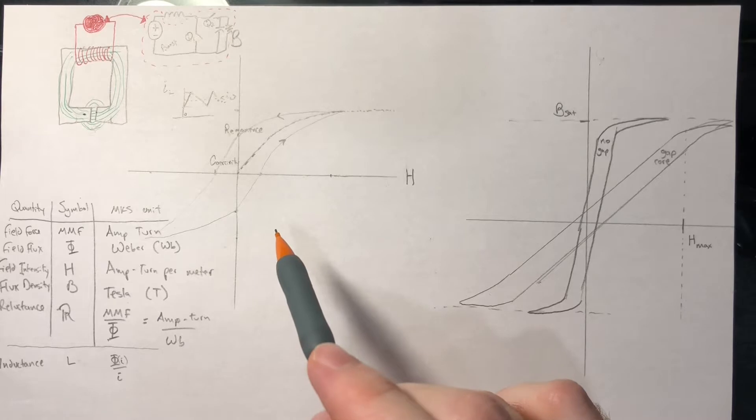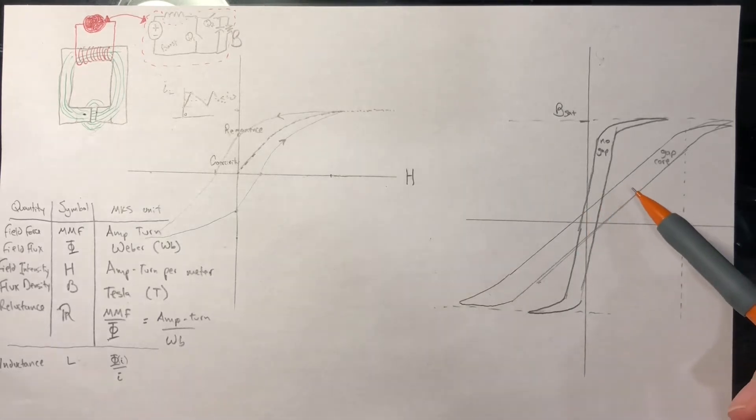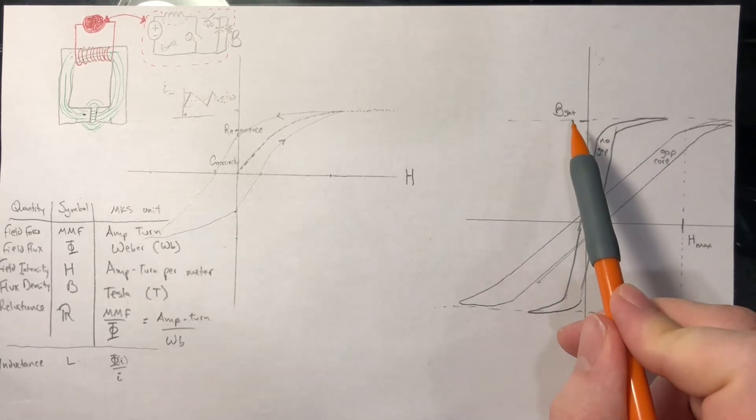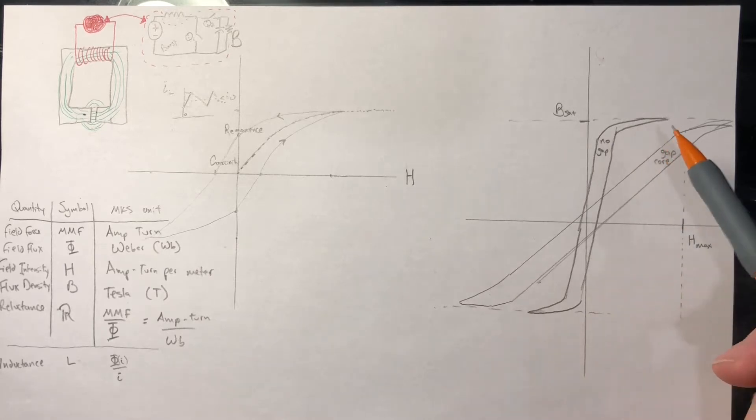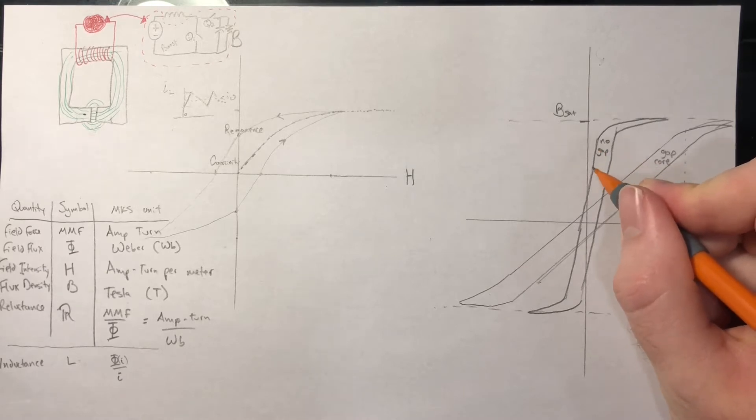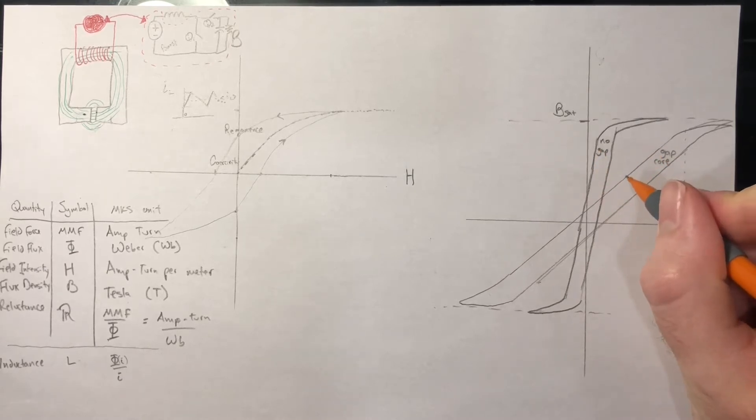So why do we need an air gap? Adding an air gap does not lower the saturation of the core's material, but it does lower the magnetic permeability. The slope here of B over H is something called mu.